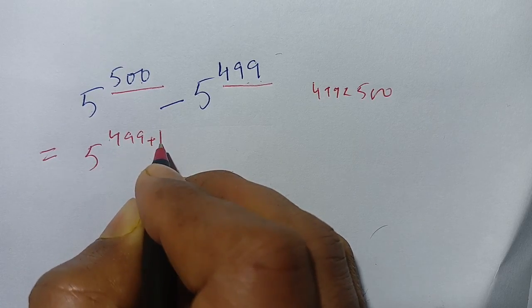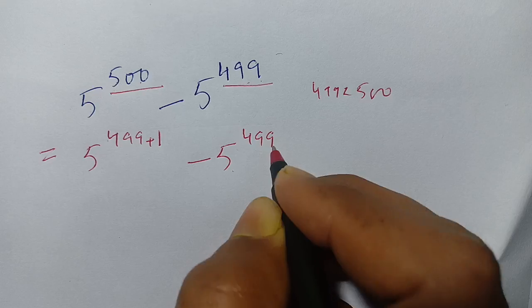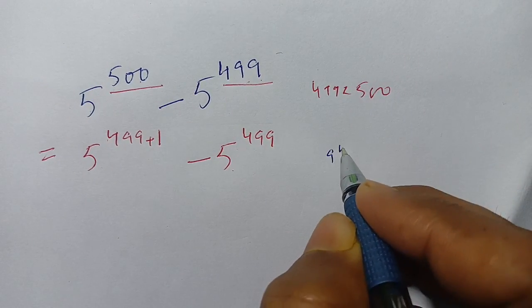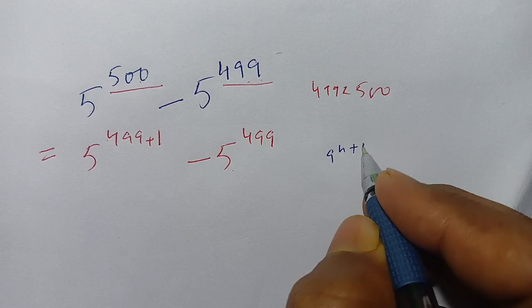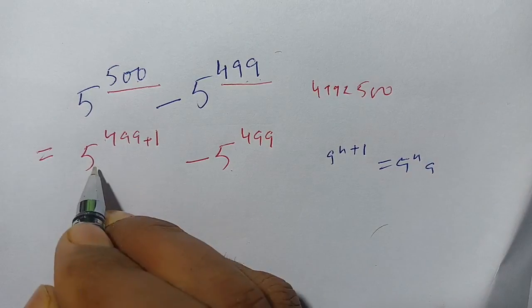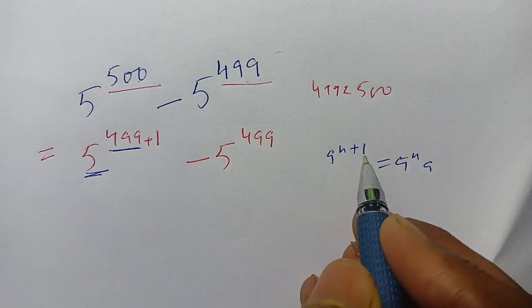5 power 499 plus 1 minus 5 power 499. We know that when a power n plus 1 can be written as a power n times a. Here a is 5, and in place of n is 499, and 1 is 1.